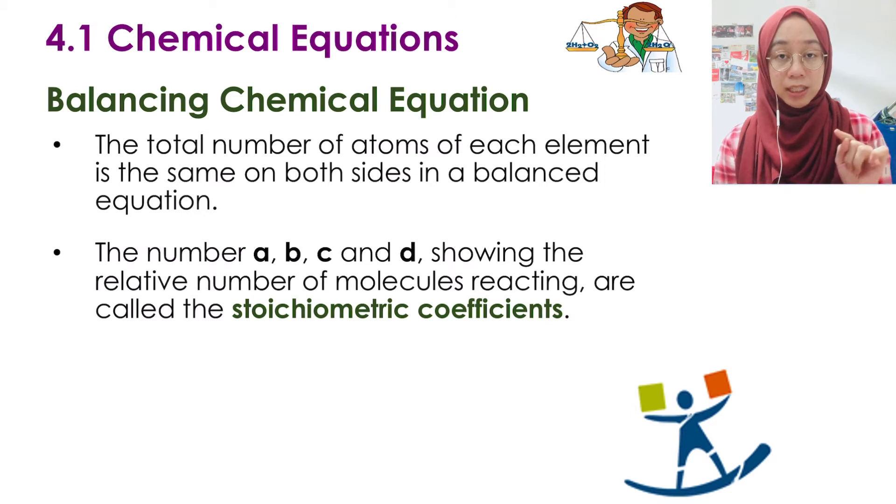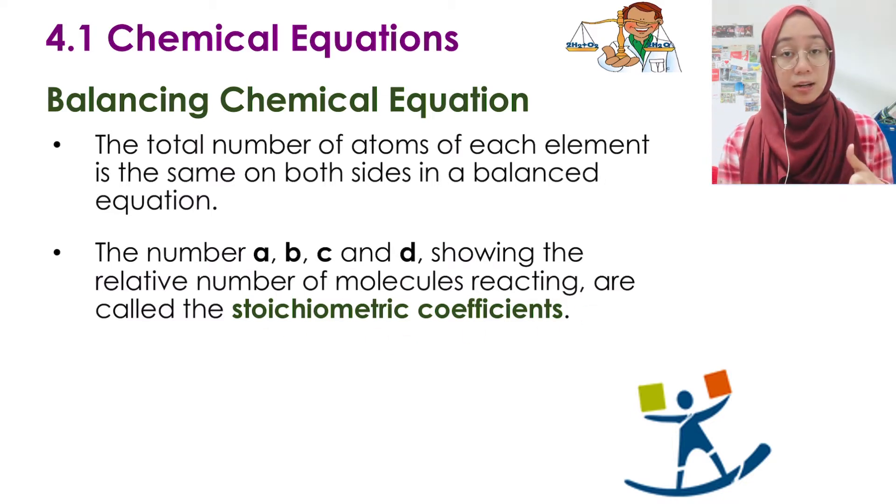The total number of atoms of each element is the same on both sides in a balanced equation. Remember the lowercase letters? Those show the relative number of molecules reacting. This is what we call as the stoichiometric coefficient. You will hear me say coefficient after this.